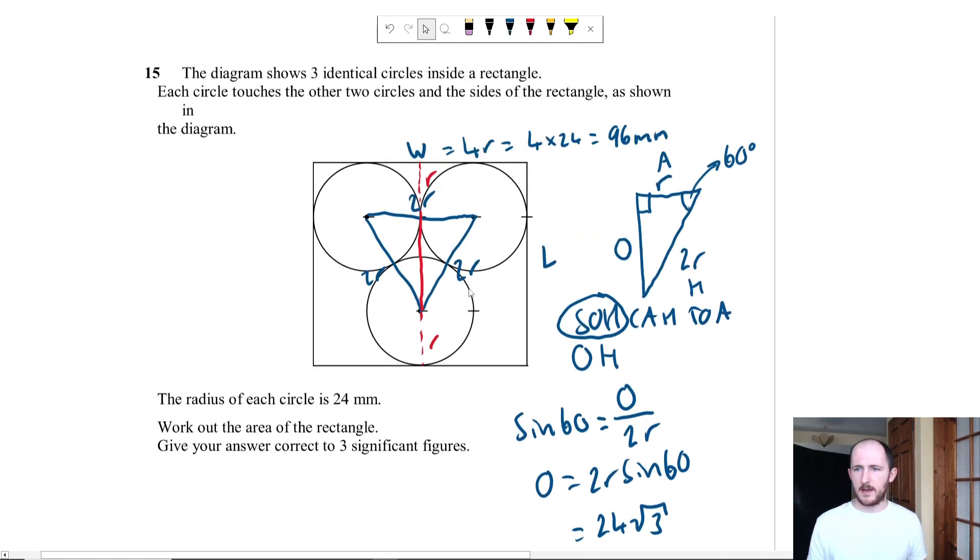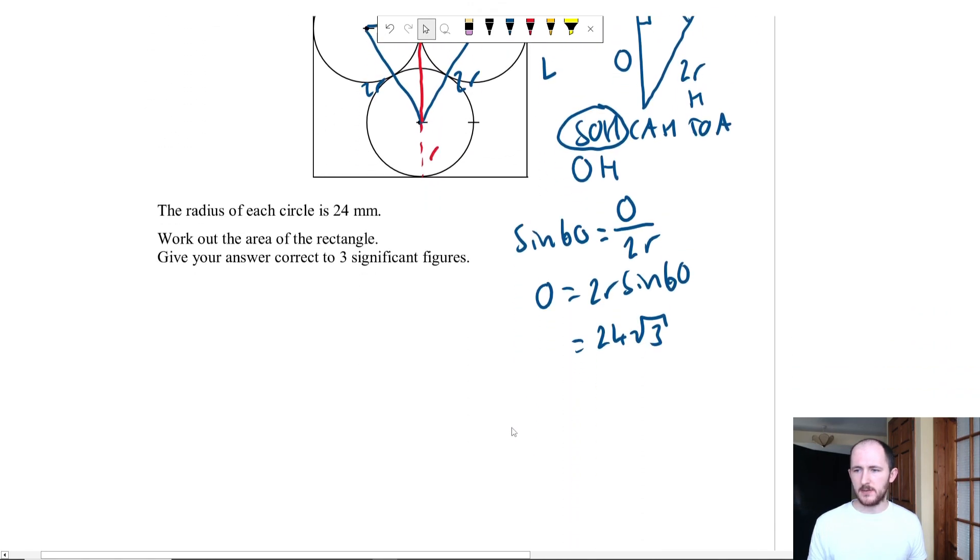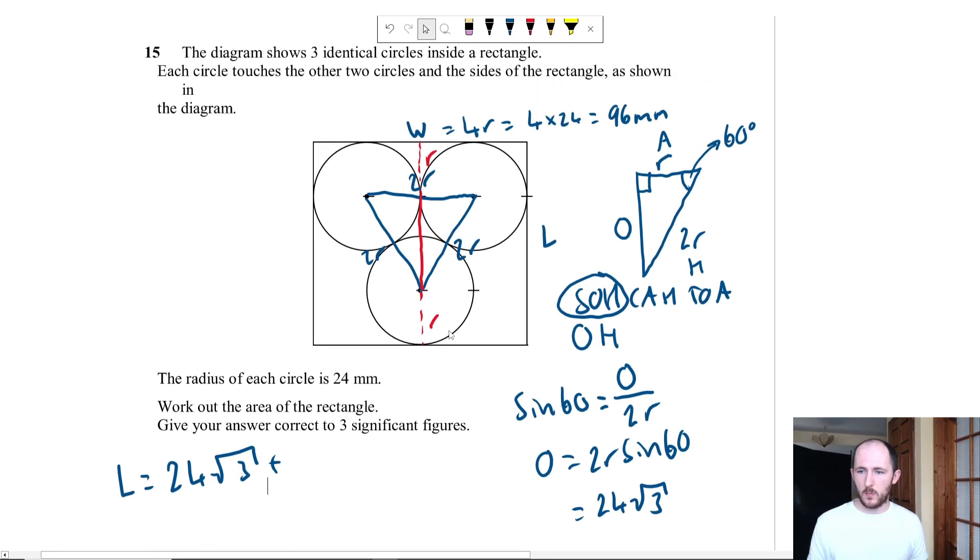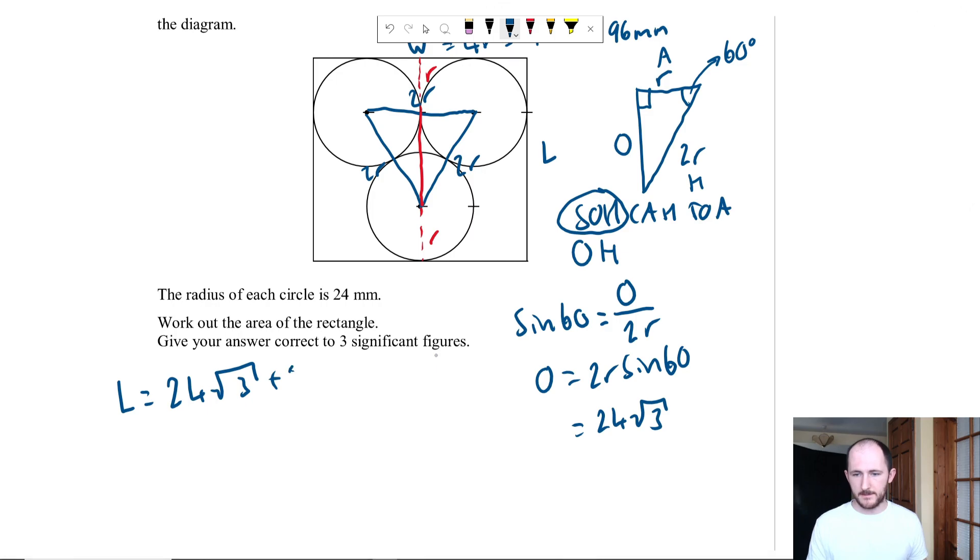Okay so now the actual length of the rectangle as we said before is equal to that 24 root 3 plus one radius plus another radius so plus 2R. So in other words it's 24 root 3 plus 48 right because 2 times 24 yeah because R is 24.